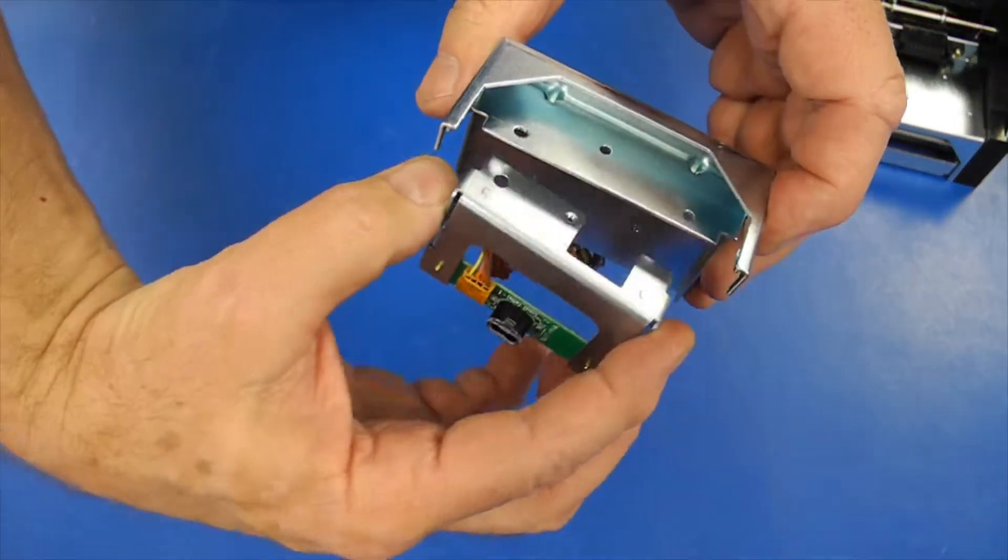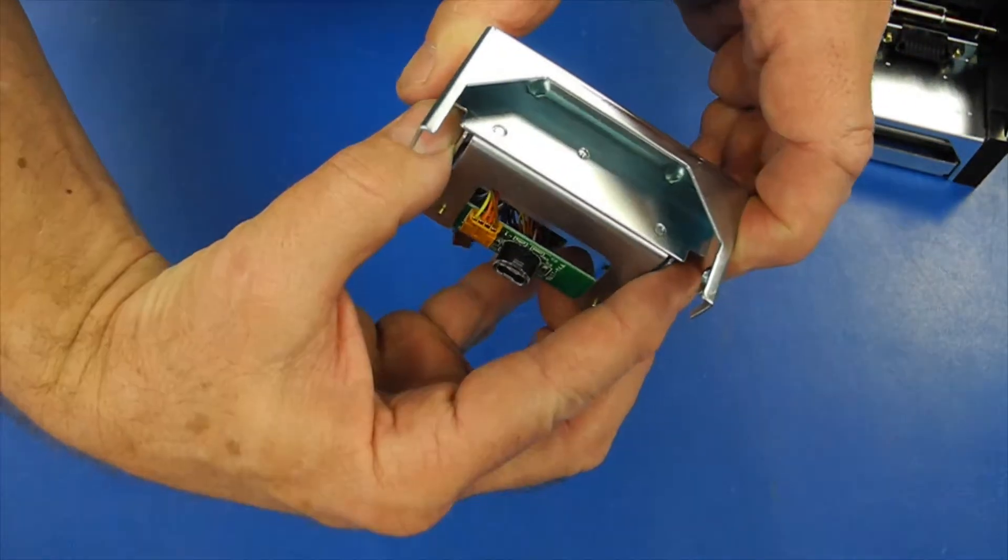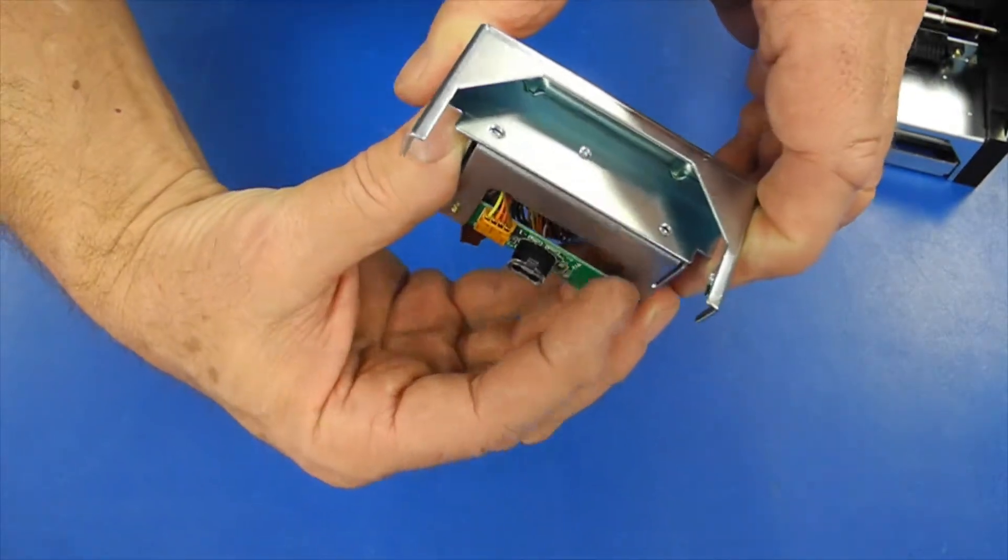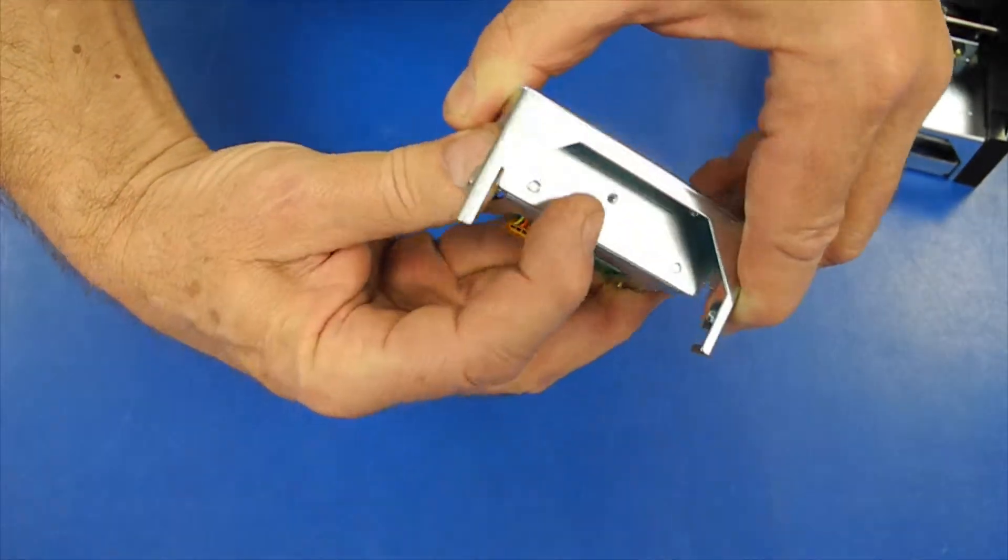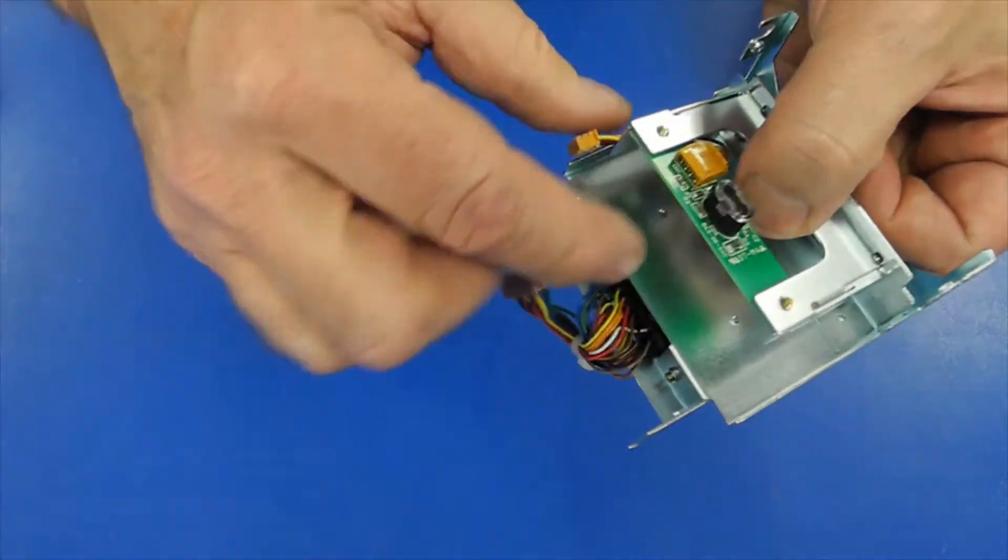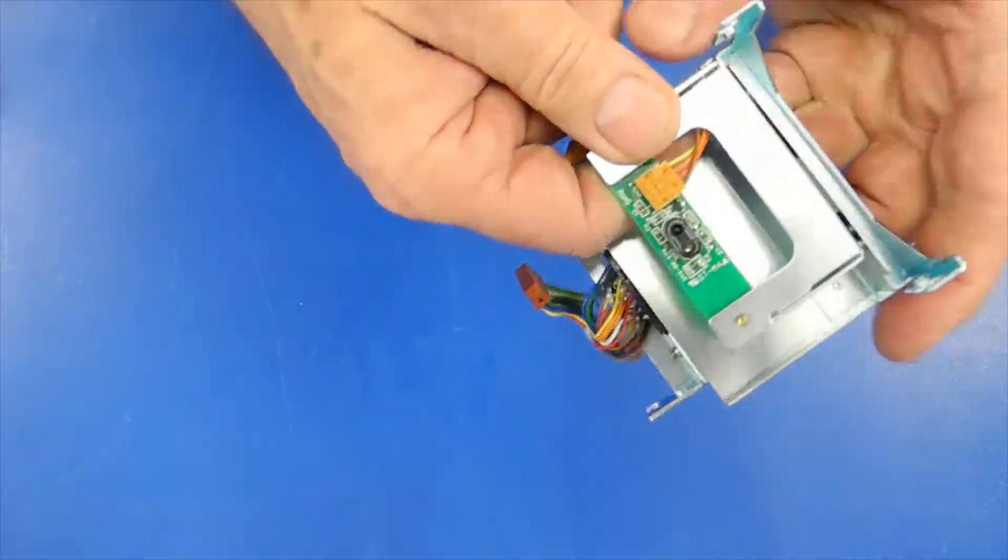Position the bracket lining up the three holes. Two have pins, the third one's a screw. Put a screw into the third hole and plug the cable into the processor board.